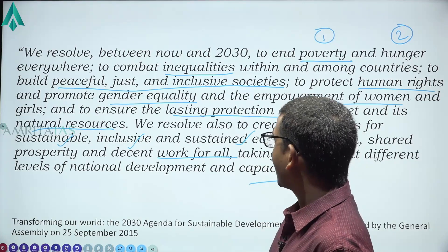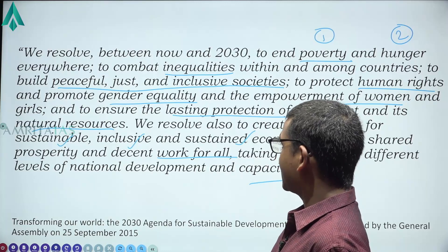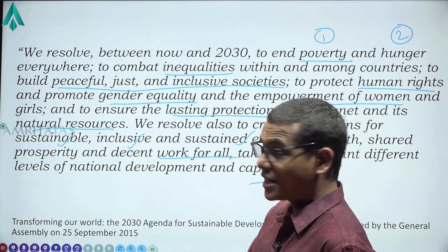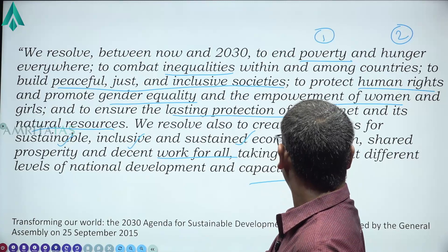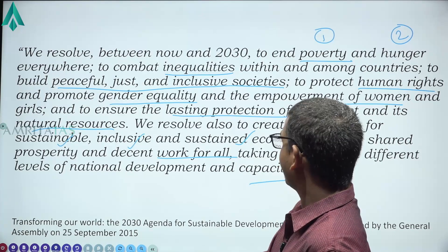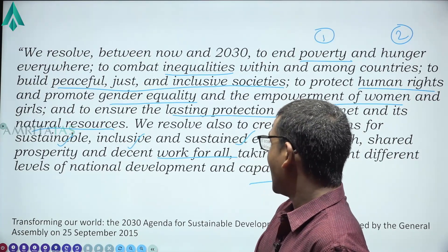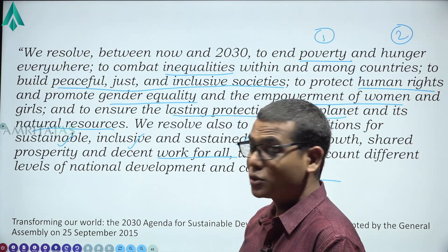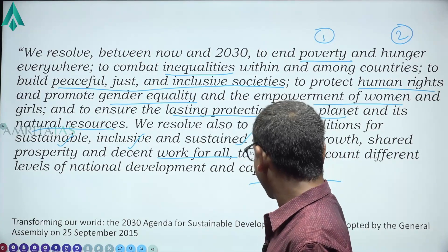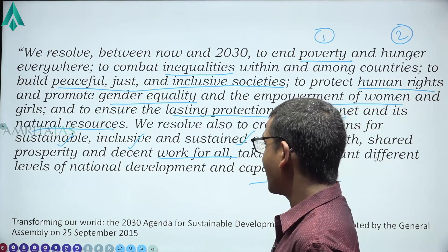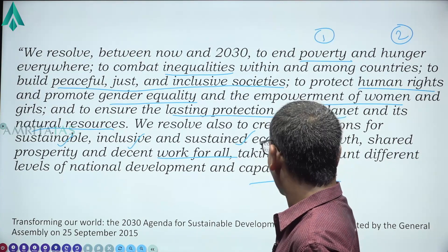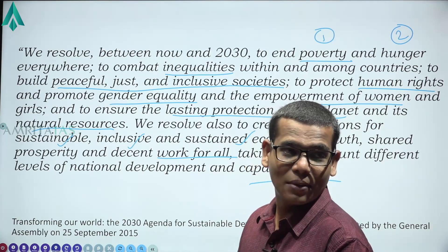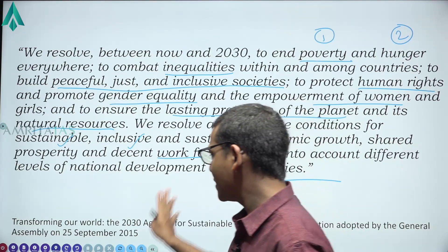This is the broad idea of human development as per the United Nations. It includes poverty, hunger, inequalities, peaceful and just society, protection of human rights, gender equality, empowerment of women, protection of the planet and natural resources, sustainable and inclusive economic growth, shared prosperity, and decent work for all. These are the key components of the UN's vision for human development.